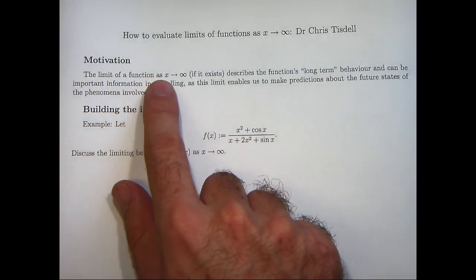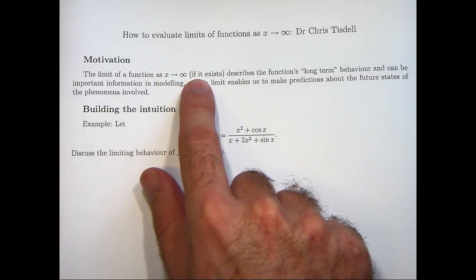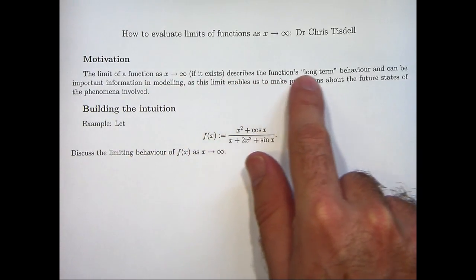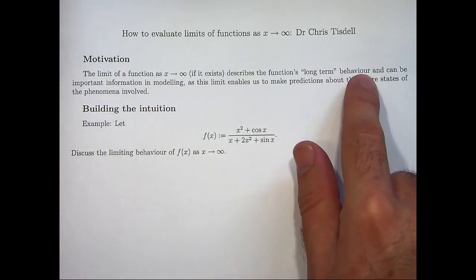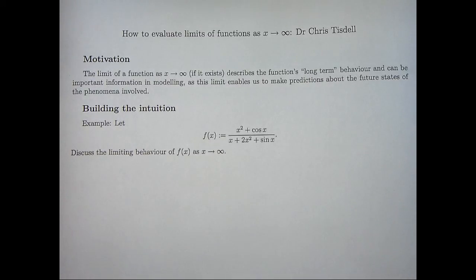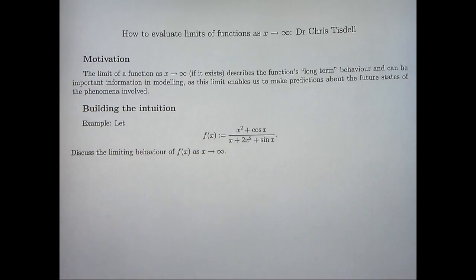The limit of a function as x gets large and positive, if the limit exists, can describe the function's long-term behaviour or the long-term trend of the function. And geometrically what's going on here is if this limit exists, then the function will have a horizontal asymptote represented by the limit value.